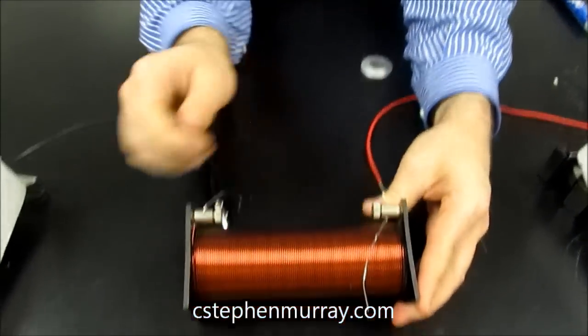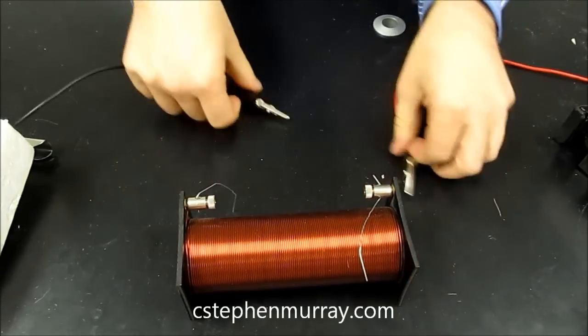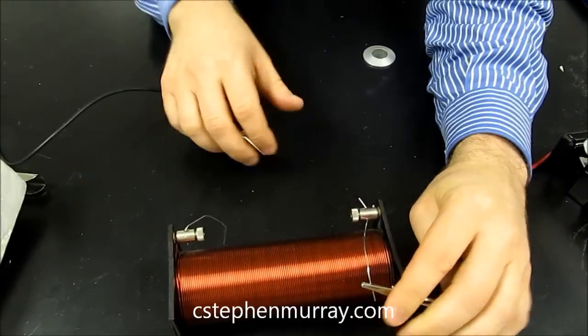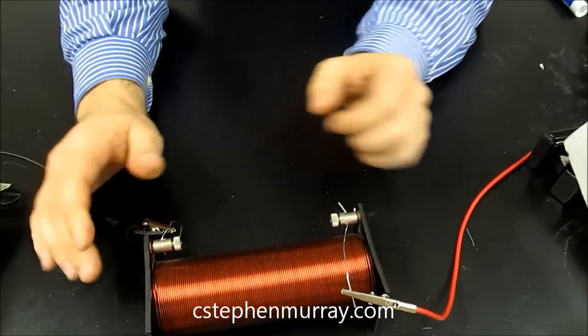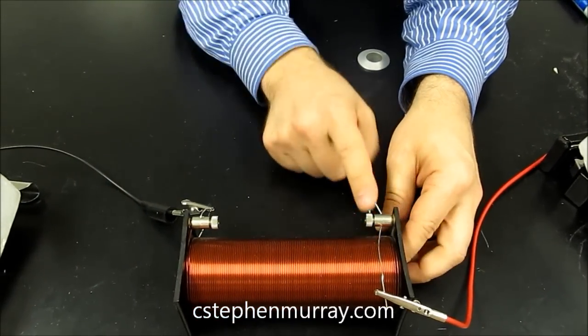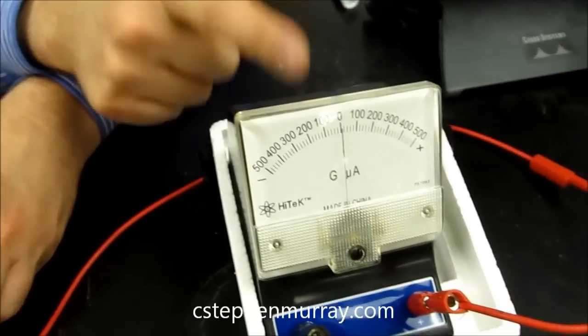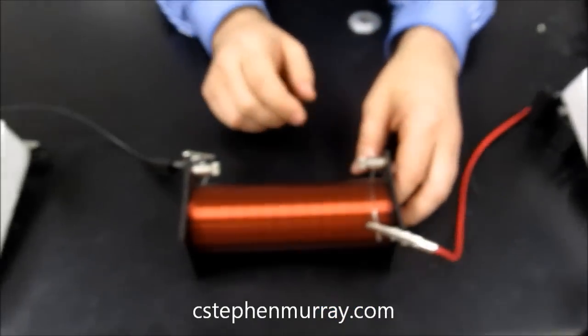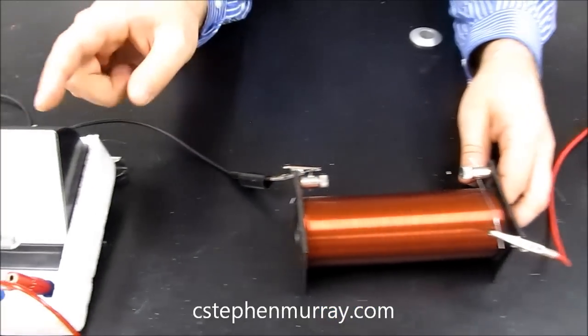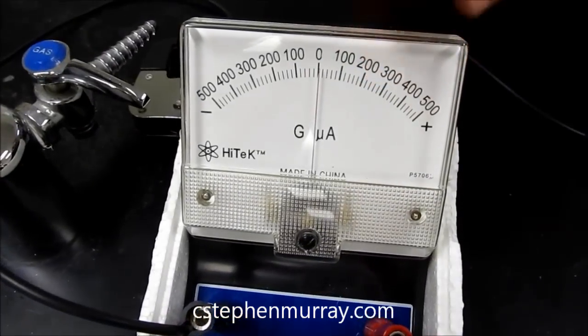I'm going to hook this up so that I have the positive side here and the negative side here. Now this tells me if the current is flowing out this direction, it goes into the red, this should read positive. If current is flowing out the black lead, both galvanometers will read negative.